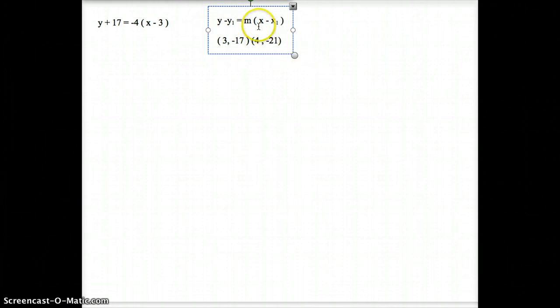Now you should understand, and hopefully understand, that this first coordinate here, the 3, is an x-coordinate. The next coordinate over here, the negative 17, is a y-coordinate. And on the next point you've got an x-coordinate over here and then you've got a y-coordinate over there.